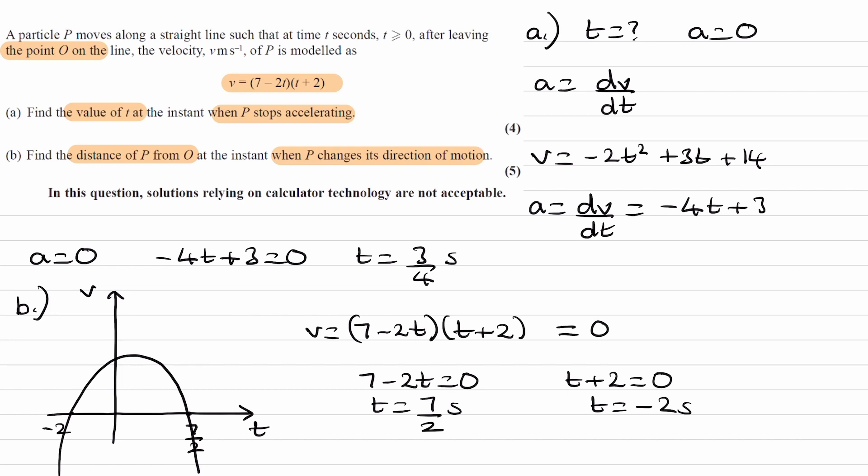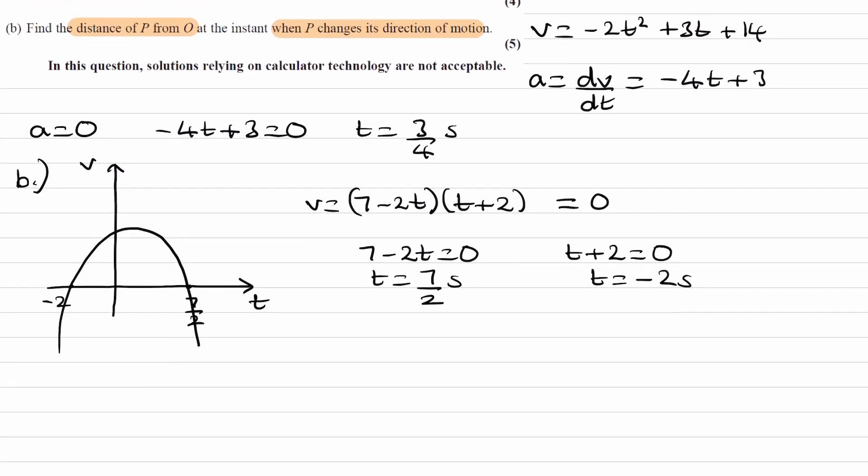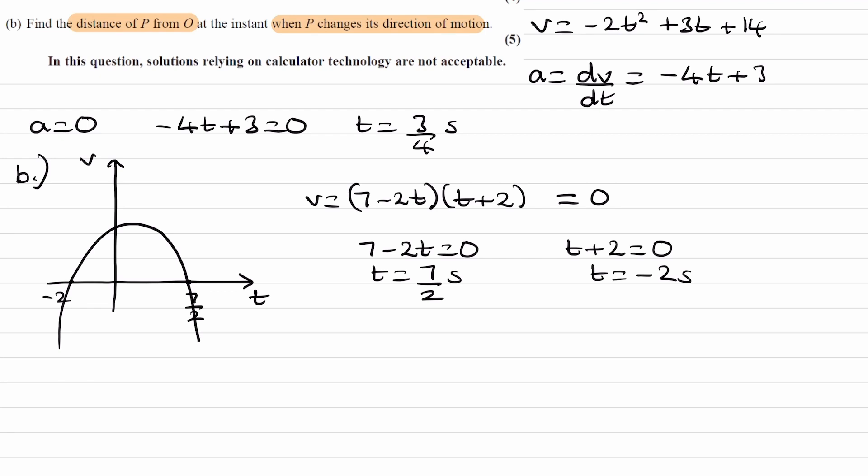And then we're trying to work out the distance of p from the origin, from point O, when p changes its direction of motion. From this graph, if we look at this region here, this is when the velocity is positive. This region here, this is when the velocity is negative.